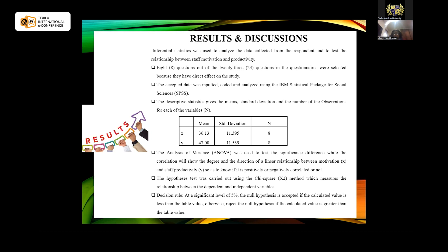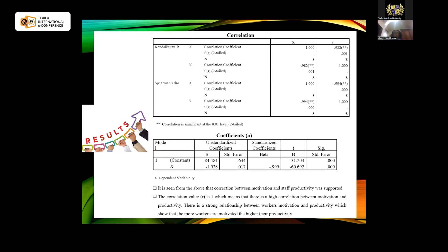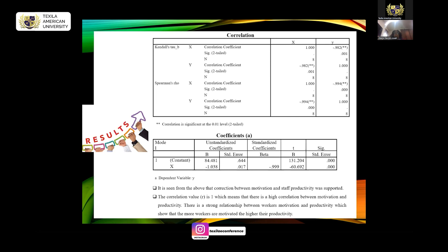A decision rule was set: at a 5% significance level, we accept the null hypothesis if the calculated value is less than the tabulated value; otherwise, the null hypothesis is rejected if the calculated value is greater than the table value. From the correlation analysis at the 0.01 significance level using the two-tail method, we can see the correlation between the X and Y variables. The coefficient showed a correlation of one between motivation and staff productivity, indicating a very strong high correlation.